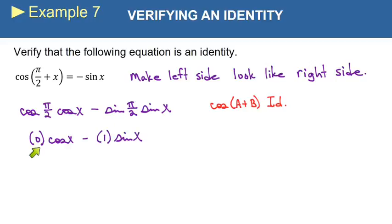And now anything times 0 is 0, so that's going to cancel out. And that's just going to leave us with negative 1 sine x or negative sine x. And that's all there is to that.